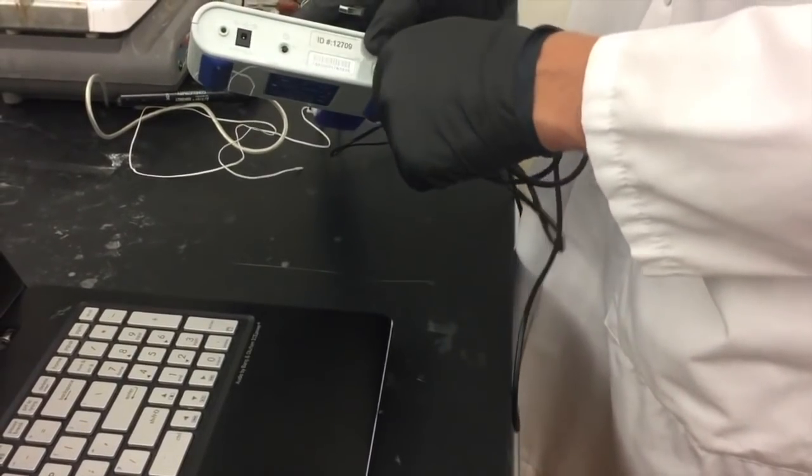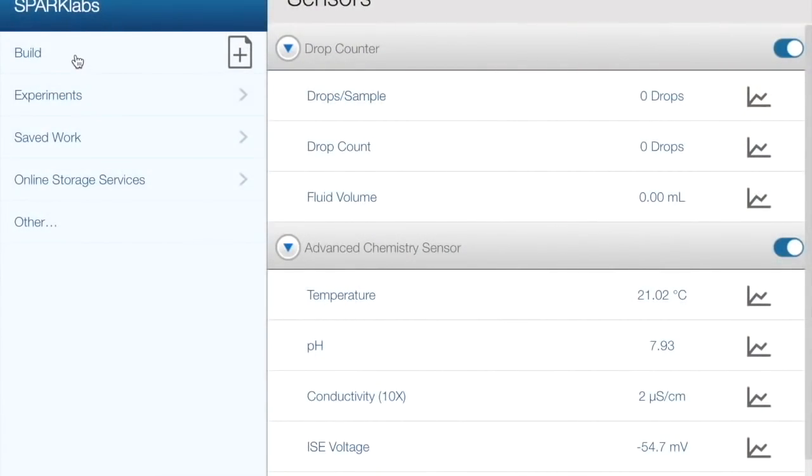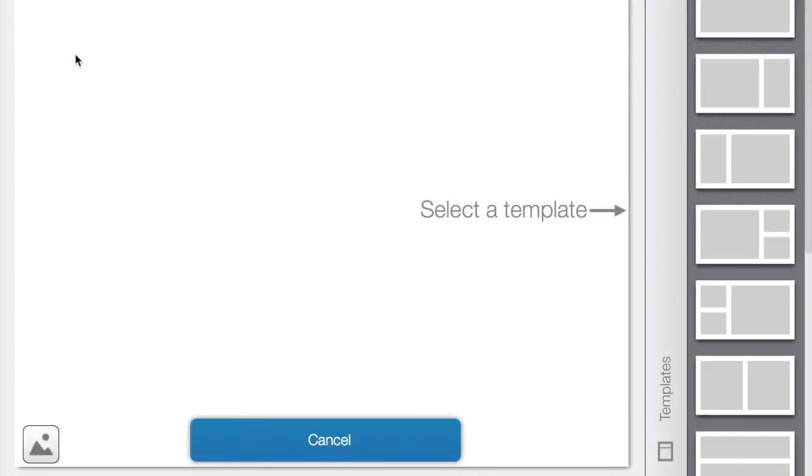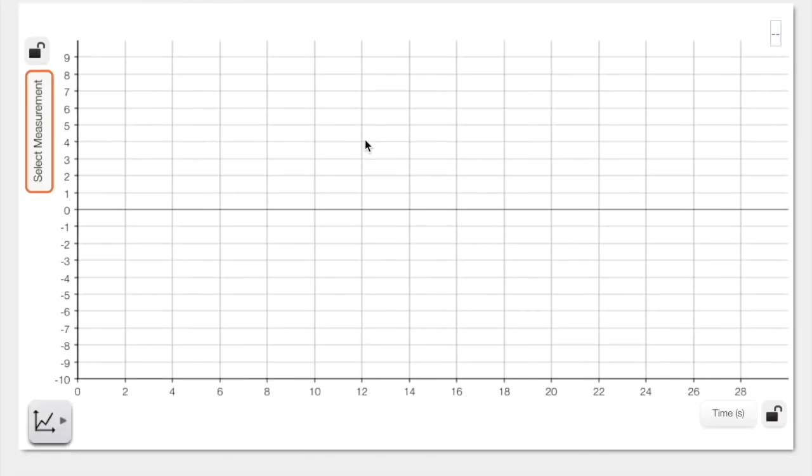The probes and meters are all set up now and you're ready to connect the SparkLink Air unit to your computer or tablet. Open the SparkView program and then select Build from the top left corner. Then choose the first template and select the first option in the top left corner in the pop-up box.